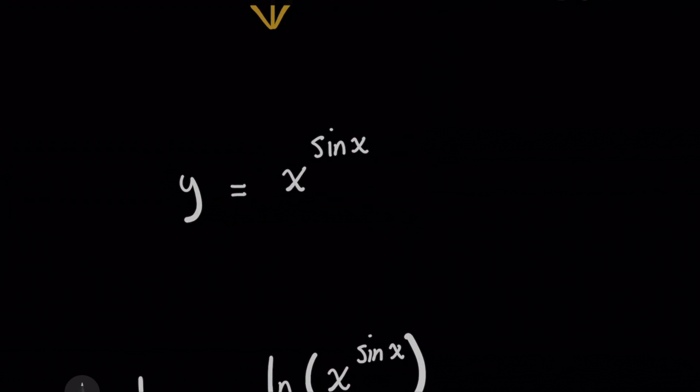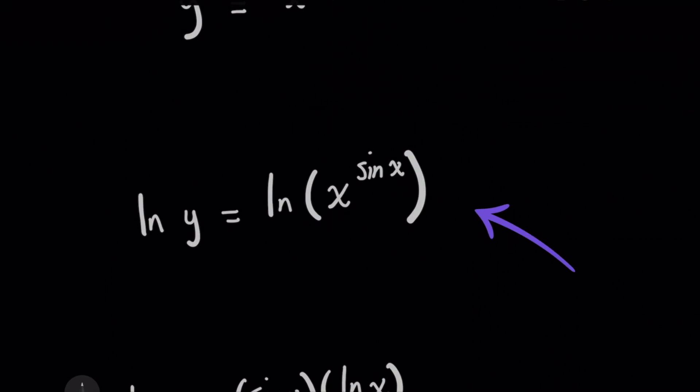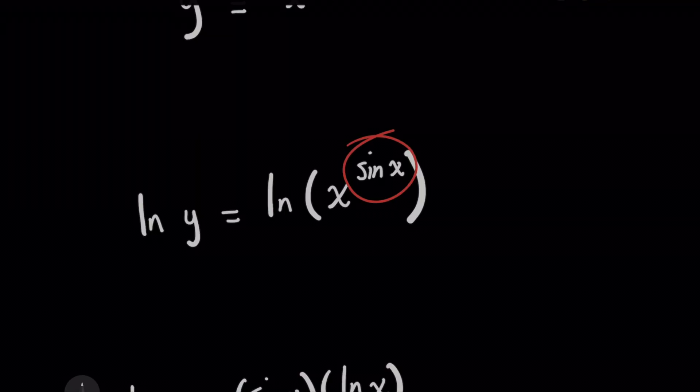So what I'm going to do is because I see x raised to some complicated power, sine of x, for problems like this, that's already a hint to me that I should really consider taking the natural log of both sides because we know for the right-hand side here, we can use a rule of logarithms where that sine of x power can be brought to the front.